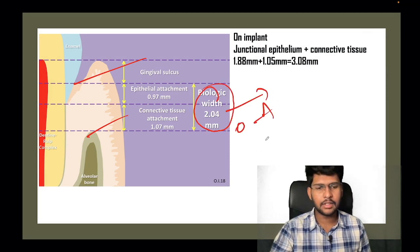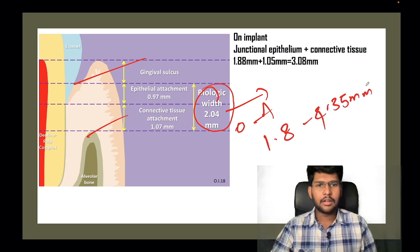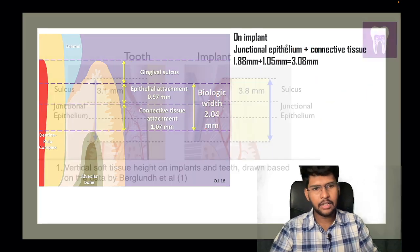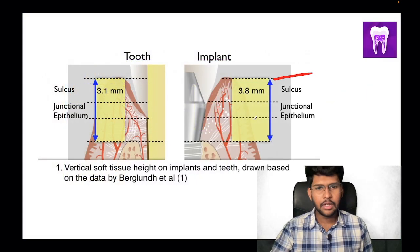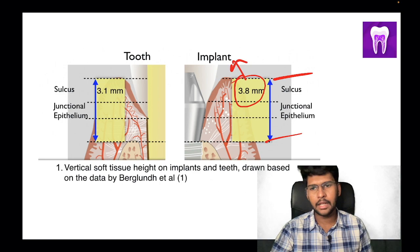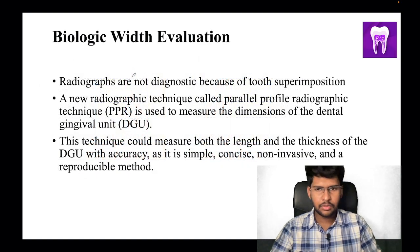The biologic width can range from 1.8 to 4.35 mm. On an implant it is 3.08 mm. The total width from the sulcus to the crest of the alveolar bone is 3.8 mm on an implant, whereas it is 3.1 mm in a natural tooth structure.